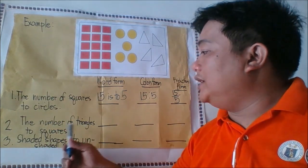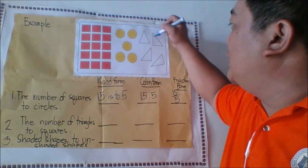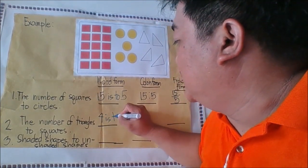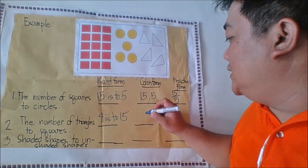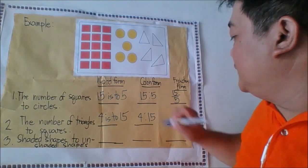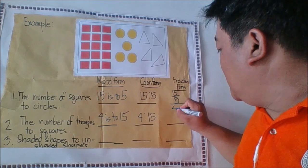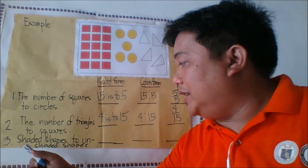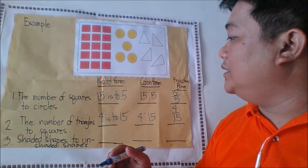Now let us compare the ratio between triangles and squares. How many triangles do we have? One, two, three, four — so four triangles is to how many squares? We have fifteen. So that is four is to fifteen. In fraction form, we have four over fifteen.